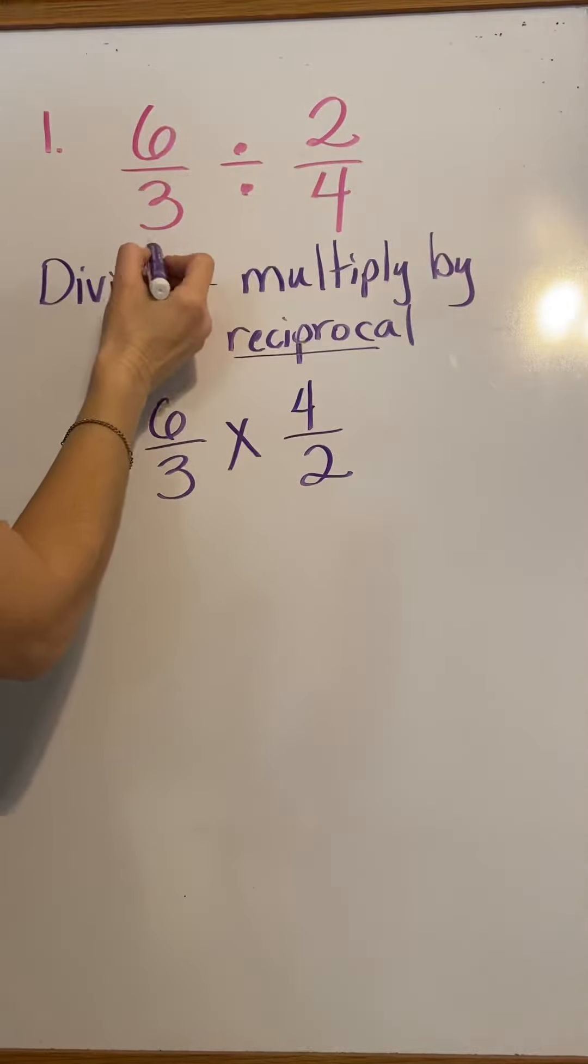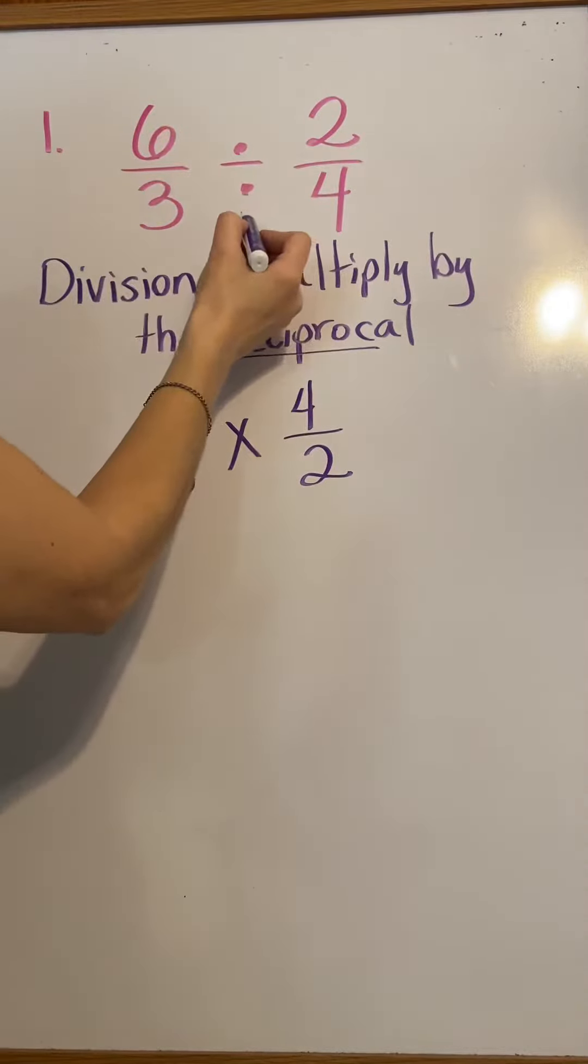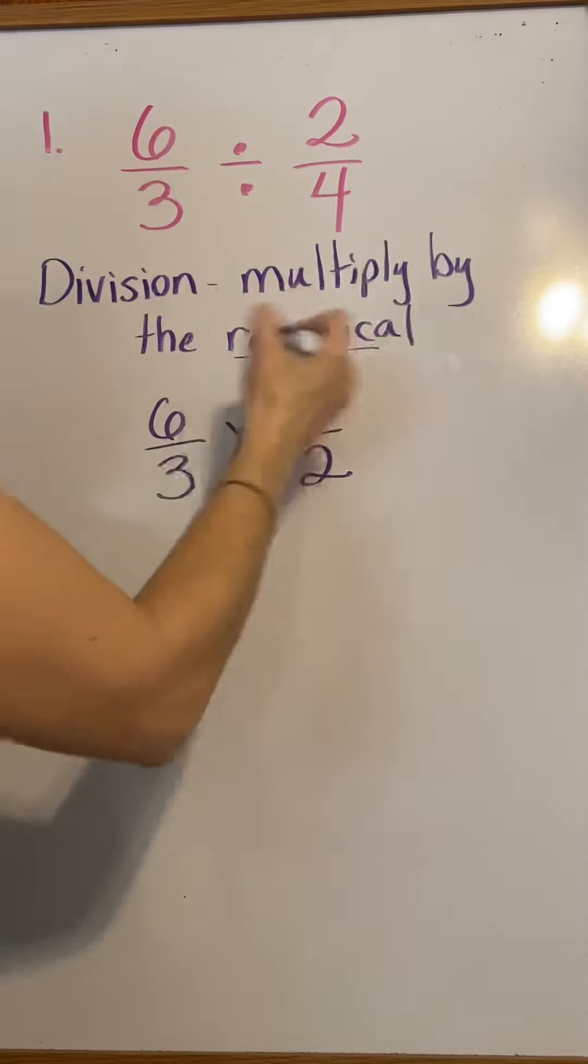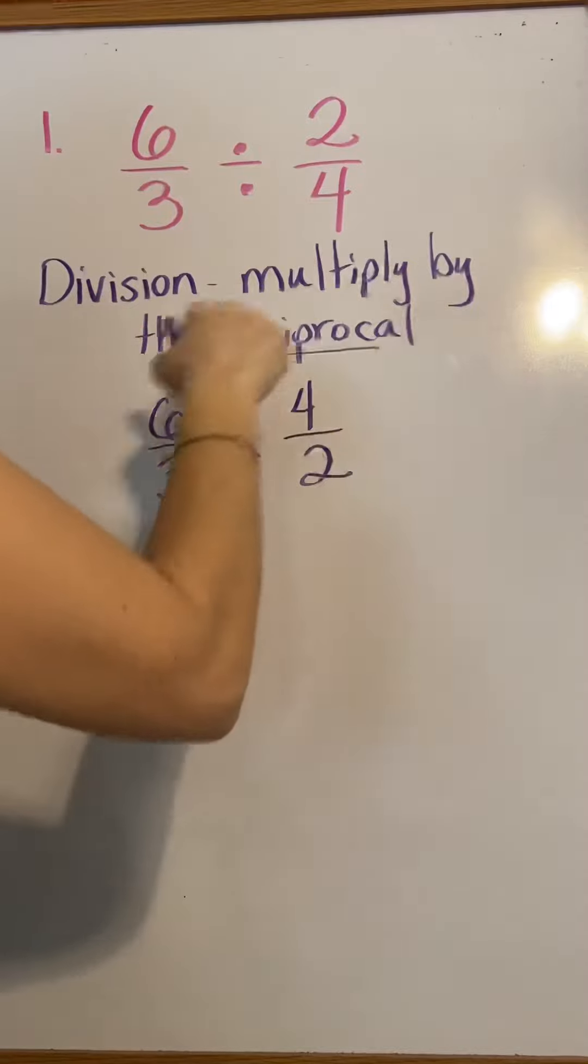So, we keep the first fraction the same, change division to multiplication, and flip the second fraction to its reciprocal. Division is to multiply by the reciprocal.